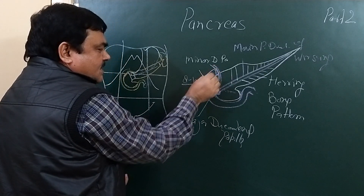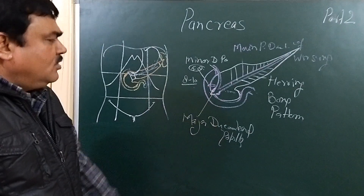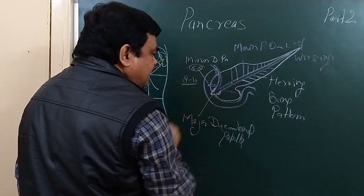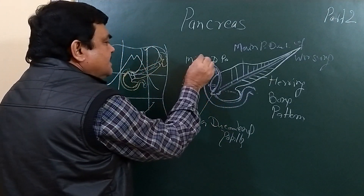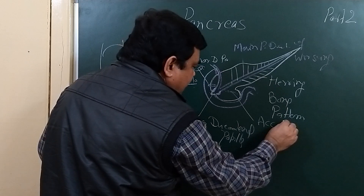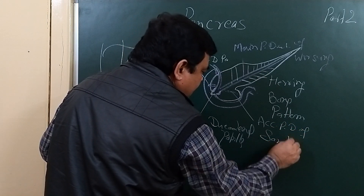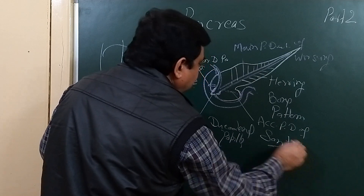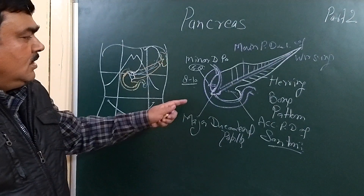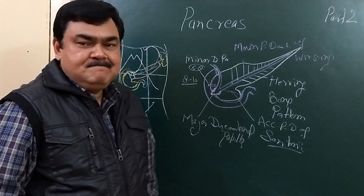This is the accessory pancreatic duct of Santorini. So these are the two ducts of the pancreas. Thank you.